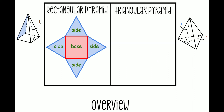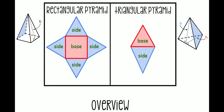When we have a triangular pyramid, the net looks something like this. We draw our base first, which is a triangle, and then we draw our sides. Because a triangle has three sides — because the base has three sides — we should have three triangular sides as well. So here is the front, here is the side, and here is the other side.